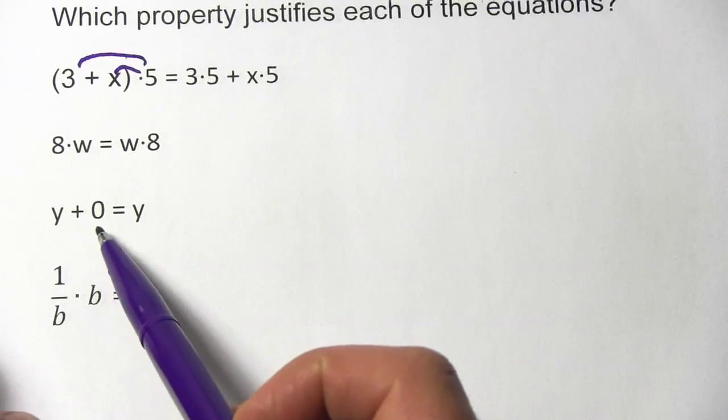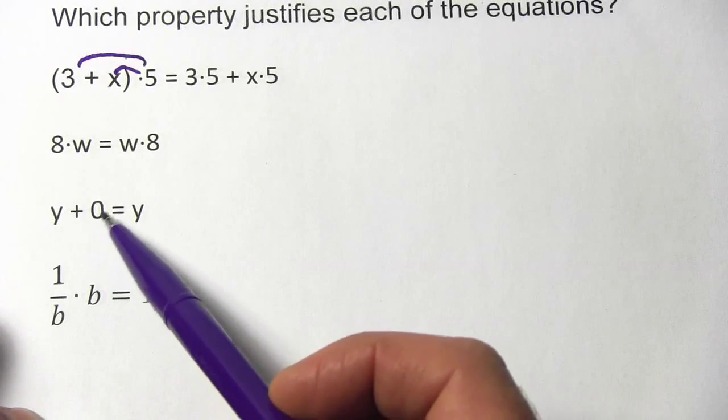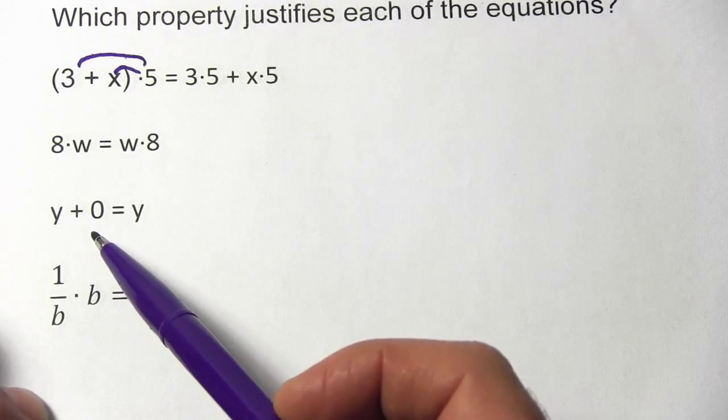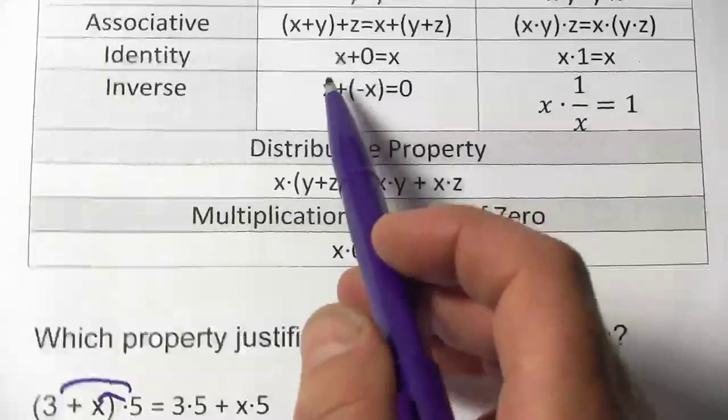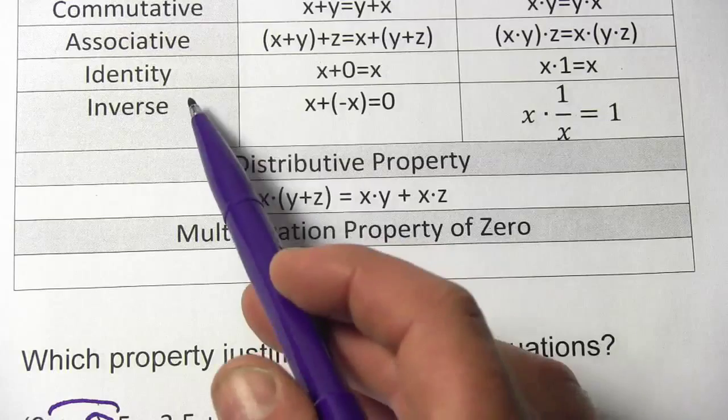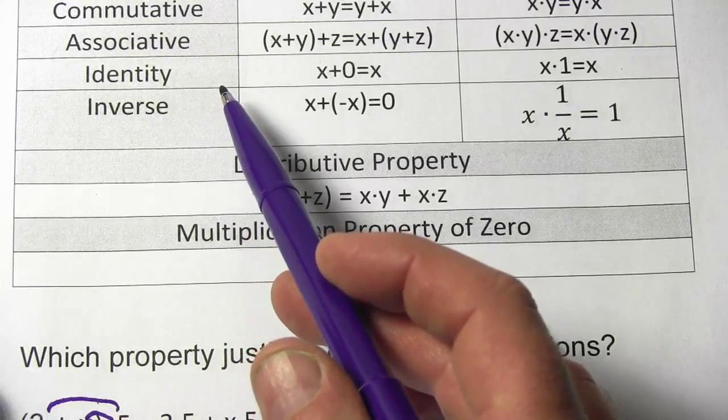Alright, the next one is y plus 0 equals y. This is addition, so it's going to be a property of addition. And it looks exactly like this one, x plus 0 equals x. That's the identity property of addition.